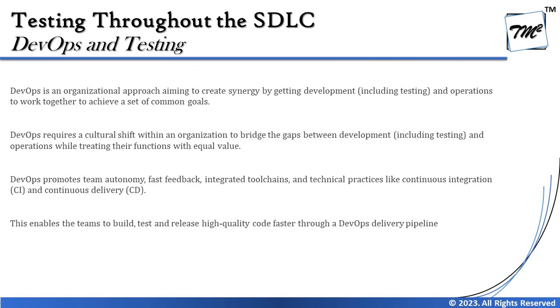Another important thing is that DevOps enables the team to build, test, and release high-quality code faster through DevOps delivery pipelines. If such things can be automated or integrated as part of a pipeline where new code is checked in and all the other tests are triggered, then a lot of effort and time being consumed traditionally can be reduced.